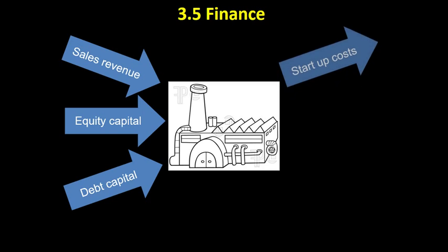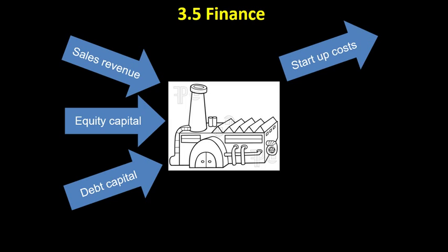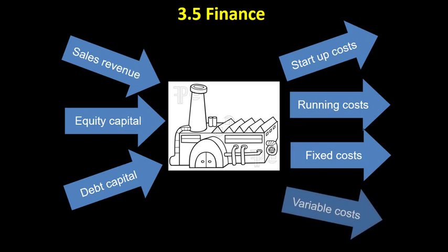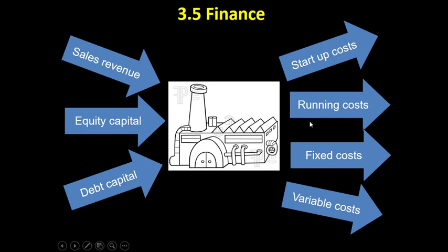Cash also flows out of a business. There are start-up costs — one-off purchases like a van or an oven depending on the business. Then there are running costs like wages and electricity bills to keep the business going. These break down into fixed costs such as rent and advertising, and variable costs such as wages. The key point is that the business needs money coming in because otherwise it won't have any money to spend.